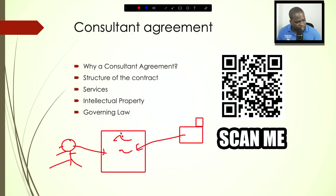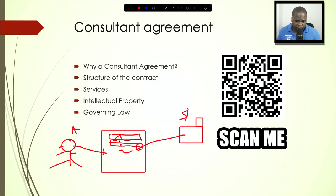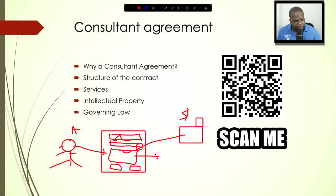All those things go in the contract — you put at the beginning who the parties are, where they are, and why you're entering an agreement. Then make sure both people sign it. Another important thing is intellectual property and governing law — those things are really important.